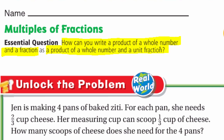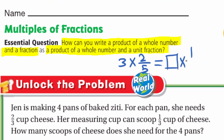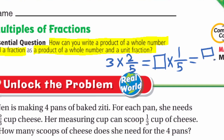So a whole number multiplied by a fraction, like 3 × 2/5 — how can we write it as a whole number multiplied by a unit fraction? Multiply it by 1/5, or how many fifths? This is our essential question for today: if we have a whole number multiplied by a fraction, how can we write it as a whole number multiplied by a unit fraction?